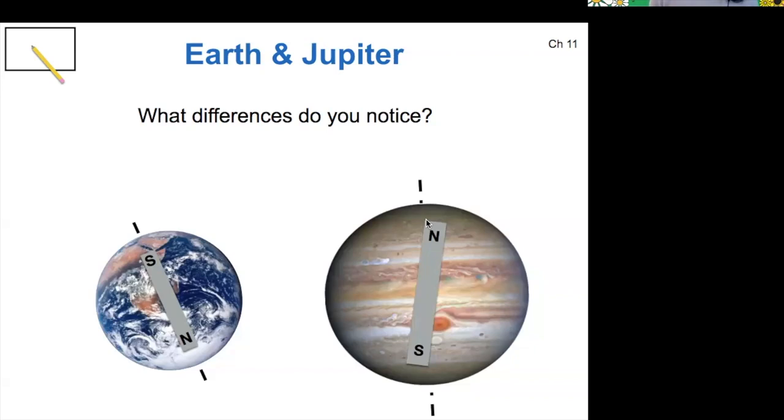The other thing to notice is that there are different axial tilts, or tilts relative to the axis. For Earth, our magnetic field is almost aligned exactly with our geographic axis—not perfectly, but almost aligned. But for Jupiter, there's quite a bit of tilt away from its axis.